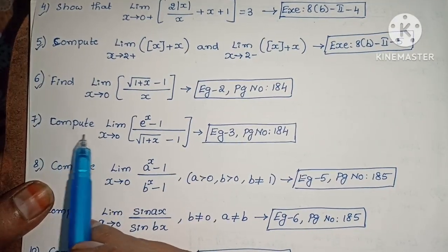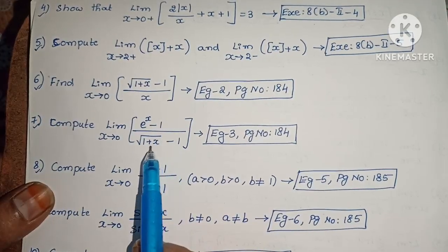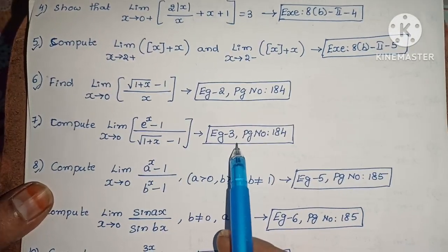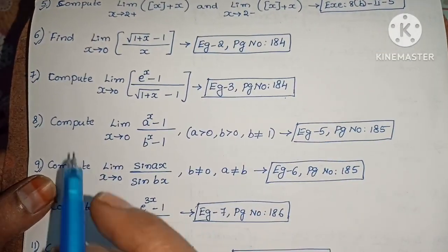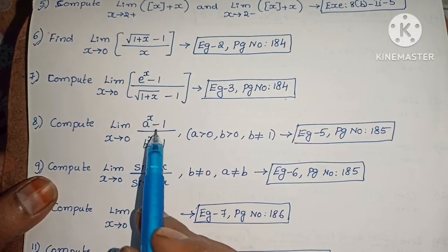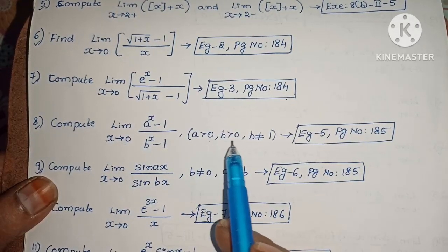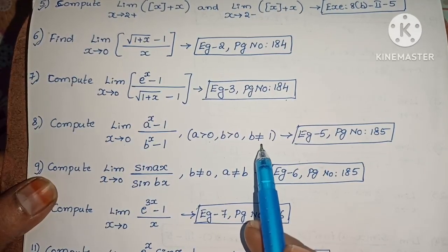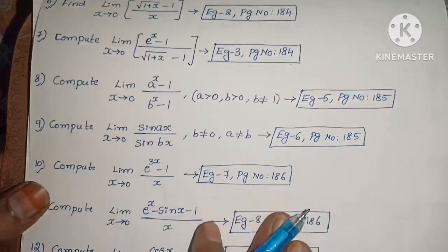Next: Compute limit extends to 0 of e power x minus 1 by root of 1 plus x minus 1. Example 3, page number 184. Next: Compute limit extends to 0 of a power x minus 1 by b power x minus 1, where a greater than 0, b greater than 0, b not equals to 1. Example 5, page number 185.